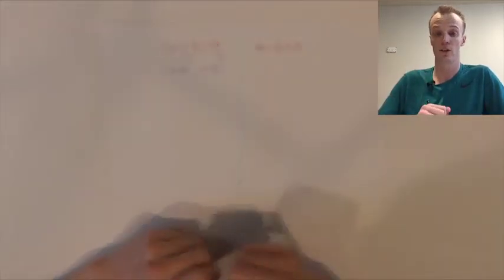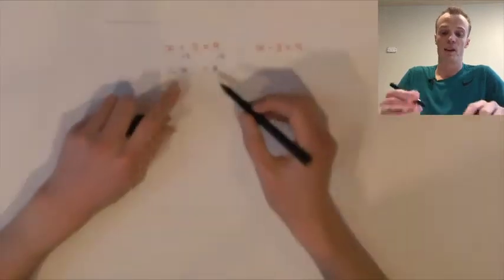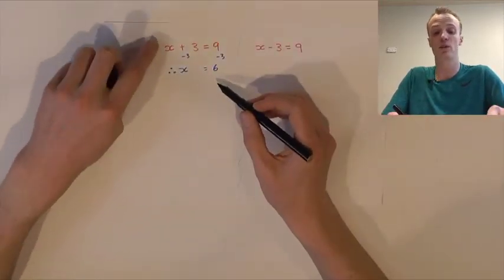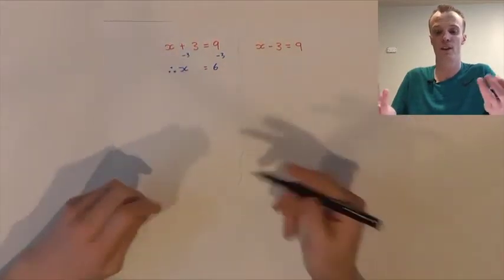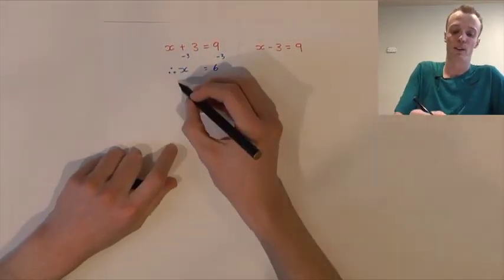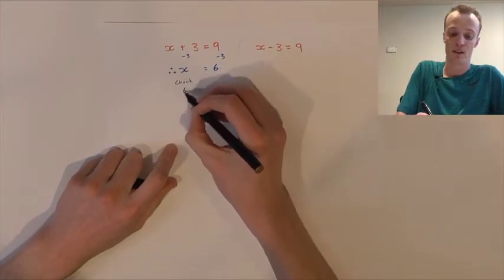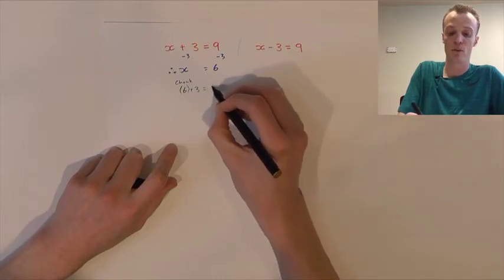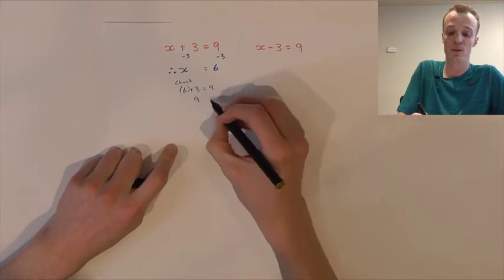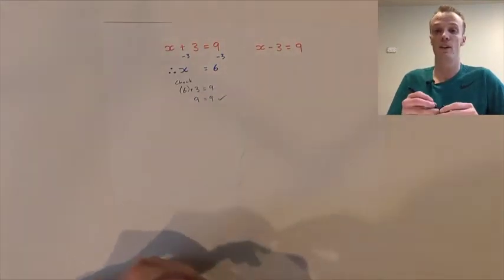The advantage with these problems is we can check our solutions through substitution. If we take our x value of 6 and substitute it back into the original formula, it should still balance. So wherever we see an x, we substitute 6. So 6 plus 3 should equal 9. We do know that 6 plus 3 equals 9, so 9 does equal 9 — we've found the correct solution.